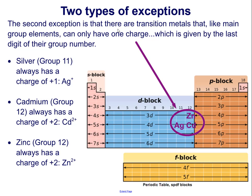The second exception is that there are transition metals that, like main group elements, can only have one charge, which is given by the last digit of their group number. Silver, which is in group 11, always has a charge of positive 1. Cadmium, which is in group 12, always has a charge of positive 2. Zinc, also in group 12, always has a charge of positive 2.